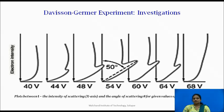Davison and Germer plotted a graph taking angle between the incident and scattered direction of the electron beam that is phi along y-axis and the intensity of the scattered beam at different values of the accelerated potentials along x-axis. The nature of the graph is as shown here.